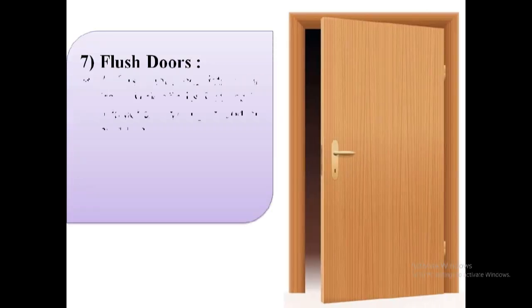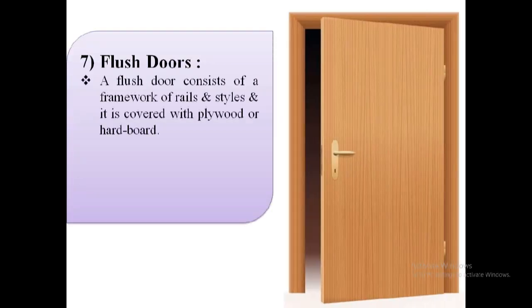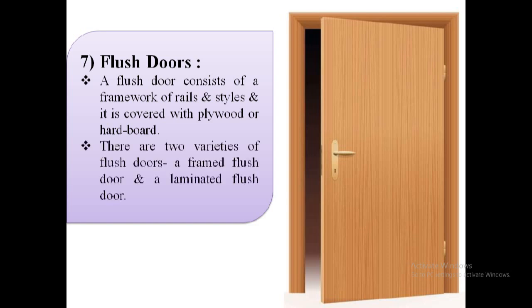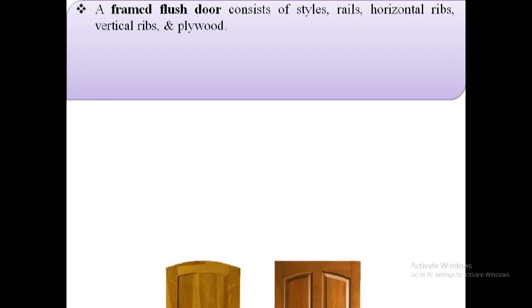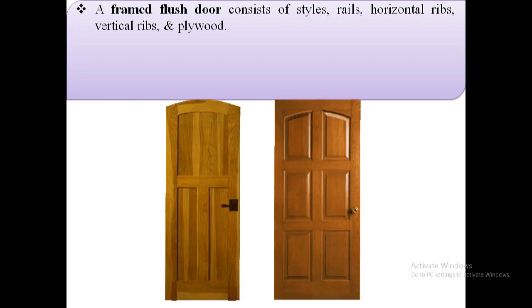The next type of door is flush doors. A flush door consists of a framework of rails and stiles and it is covered with plywood or hardwood. There are two varieties of flush doors: a framed flush door and a laminated flush door. A framed flush door consists of stiles, rails, horizontal ribs, vertical ribs, and plywood.